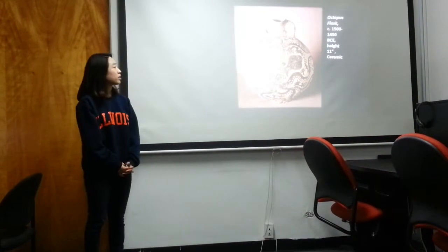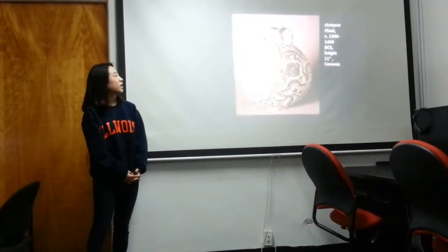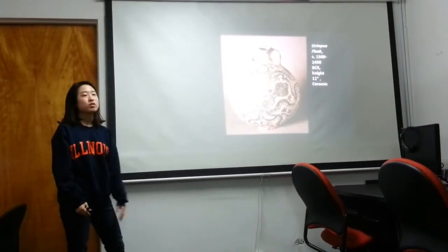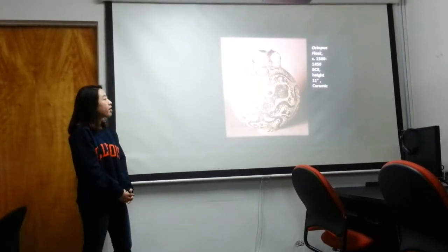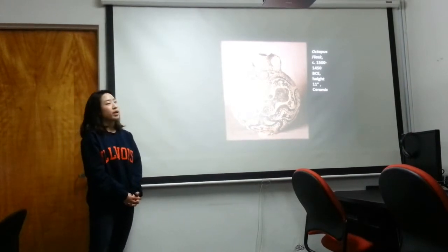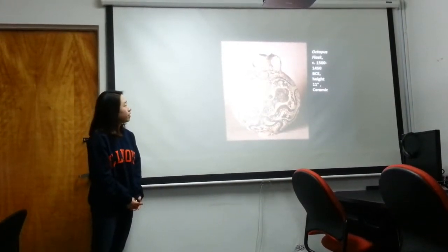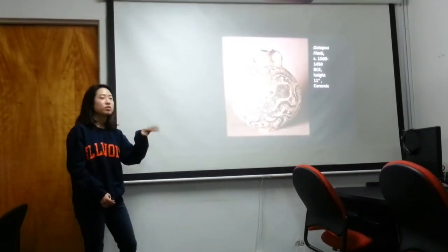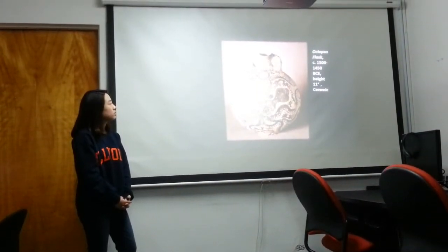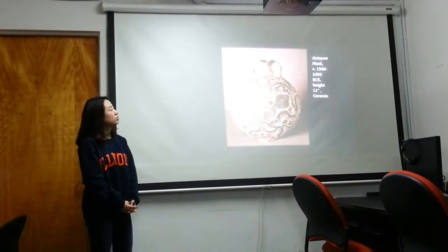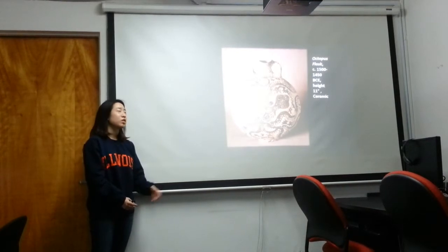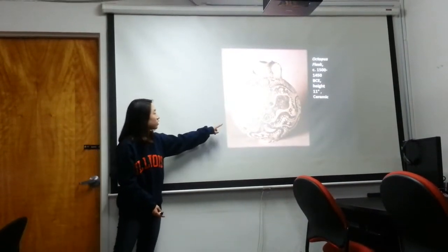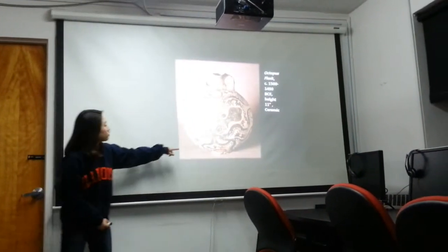This is the ceramic that I mentioned earlier. It's called the Octopus Flask. It is about 11 inches in height. It was also made in the workshop in the Palace of Knossos. The octopus was painted in dark pink, and there is seaweed and ocean elements depicted. Compared to Egyptian drawings, it is more naturalistic because you can see all the details, and there is also shading applied.